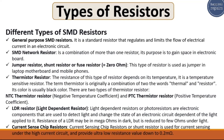Third is the jumper resistor, also called the shunt resistor or fuse resistor. Its value equals zero ohms. This type of resistor is used as a jumper in laptop motherboards and mobile phones.